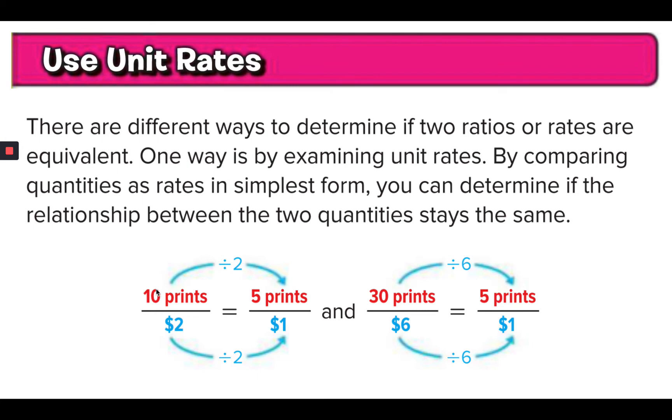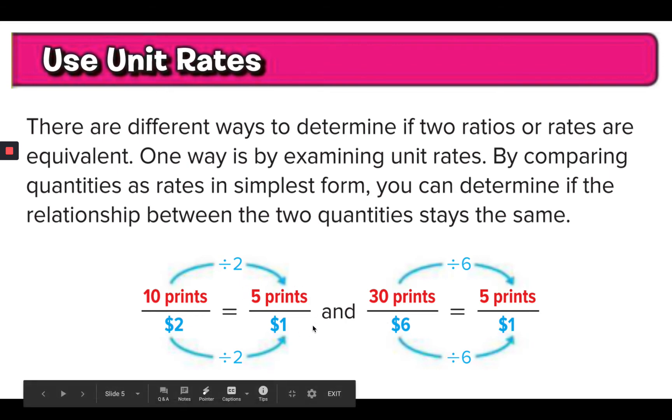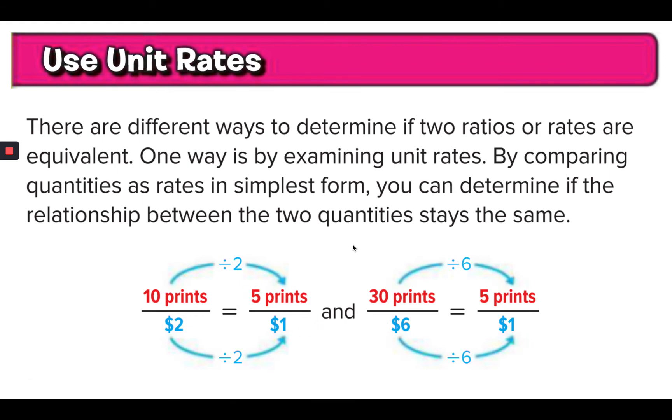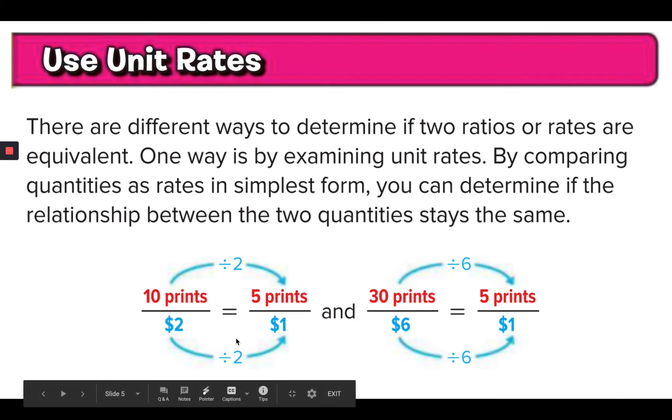So we look at something like this. They want to know if 10 prints for $2 and 30 prints for $6 are equivalent. And they are because they both reduce down to 5 prints for $1. So what this is saying is if you find the unit rate for 10 over 2, which you can divide both those by 2, that creates a unit rate of 5 over 1.